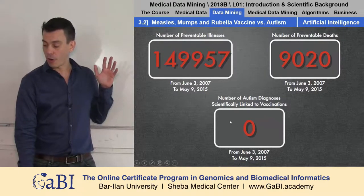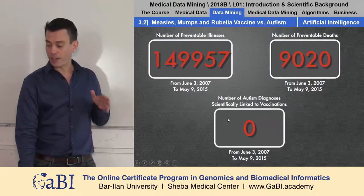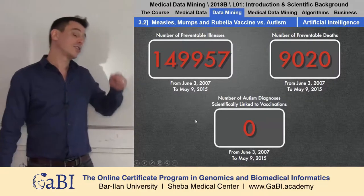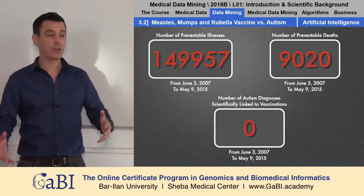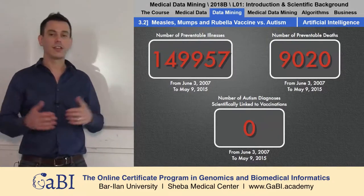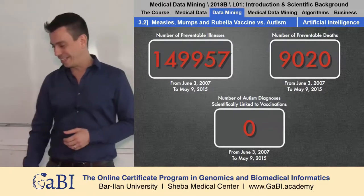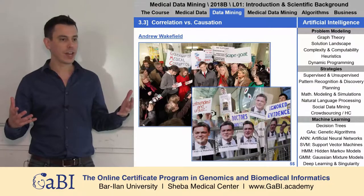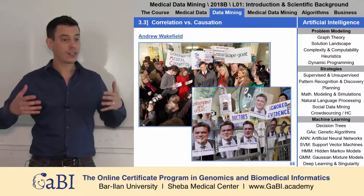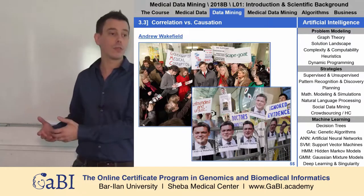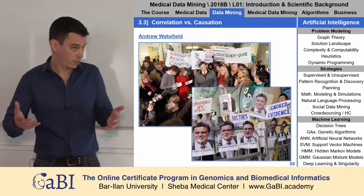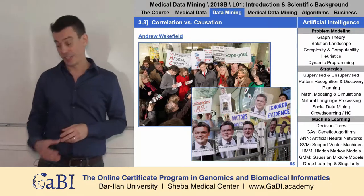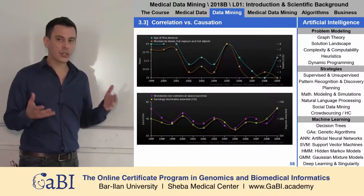And here is the number of autism diagnoses scientifically linked to vaccination — which is zero. Sometimes data alone is not enough; people are human, and therefore there is data denial. Do you know the story about Andrew Wakefield, the doctor who was actually convicted for doing this kind of manipulation for his own benefit? He fought against vaccination, and that's a serious problem.